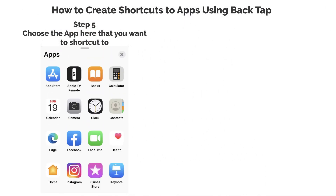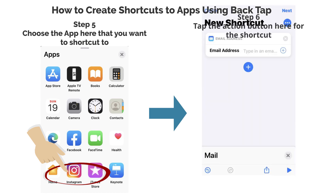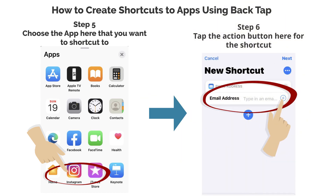Step 5. Choose the app here that you want a shortcut to. Step 6. Tap the action button here for the shortcut.